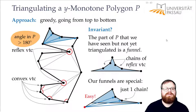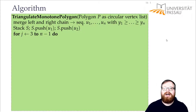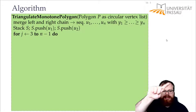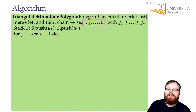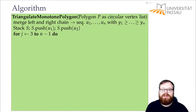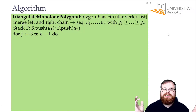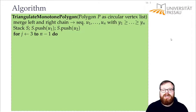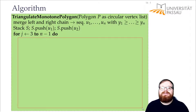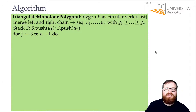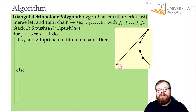Let's formulate this as an algorithm: Triangulate-Monotone-Polygon, given a y-monotone polygon as a circular vertex list. We look at the vertices u1 to un from top to bottom — highest y-coordinate first. We put all vertices we've looked at but haven't handled onto a stack. Initially, we place the first two vertices on the stack. Then we continue with the next vertices. There are two cases depending on where the new vertex lies: if it lies on a different chain than the previous vertex, that's case one; if it lies on the same chain, that's case two. The previous vertex is always the topmost on the current stack.